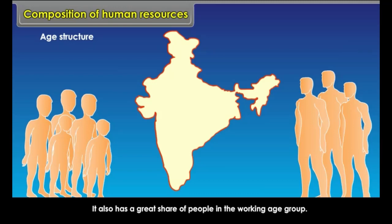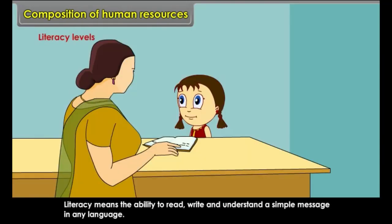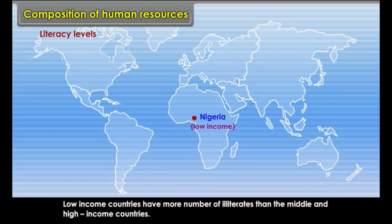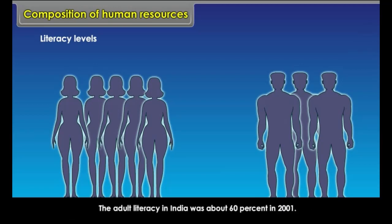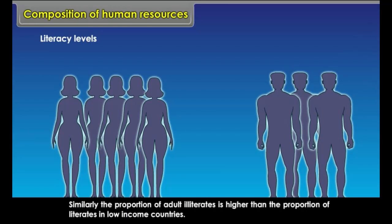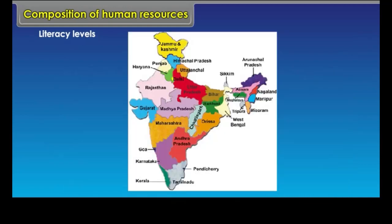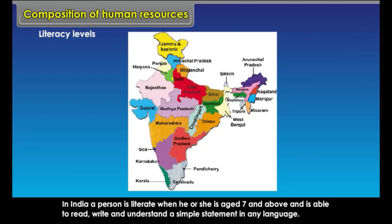Literacy Levels: Literacy means the ability to read, write and understand a simple message in any language. If a person can read but cannot write, he or she is considered illiterate. Low income countries have more illiterates than middle and high income countries. More than two-fifths of females are illiterate compared to males. The adult literacy in India was about 60% in 2001. In India, a person is literate when he or she is aged 7 and above and is able to read, write and understand a simple statement in any language.